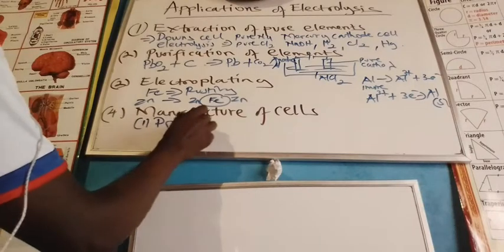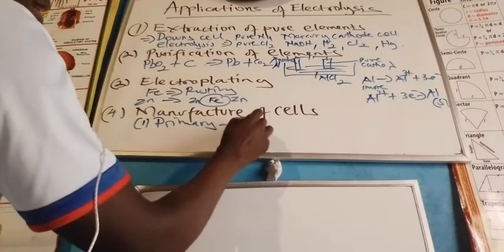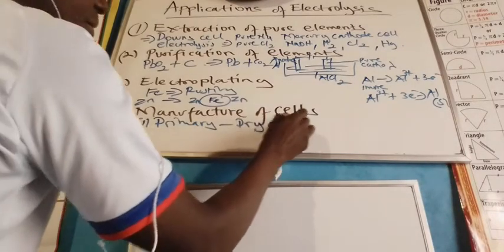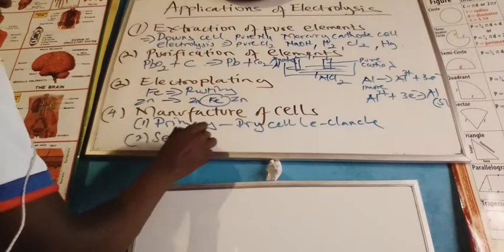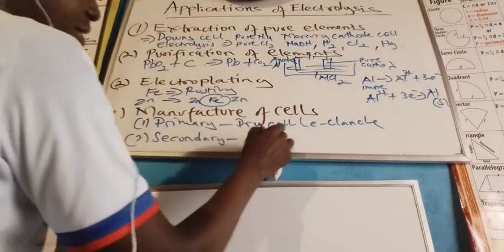Primarily, mainly the dry cell. And two, the secondary cell, mainly the lead acid accumulator.